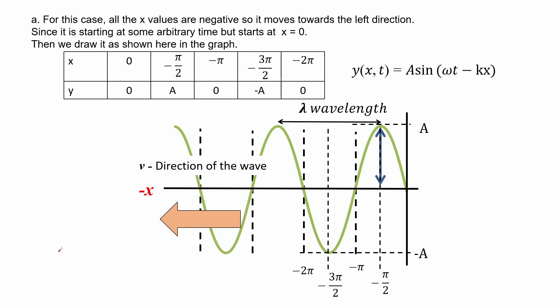For letter A, all x values are negative, so the wave is moving in the direction of the negative x-axis — moving to the left. Since it starts at some arbitrary time, we can set t = 0 to make it easier to solve. It starts at x = 0, the origin point. Substituting x = 0 gives sine of 0, which equals 0, so it starts from this point.